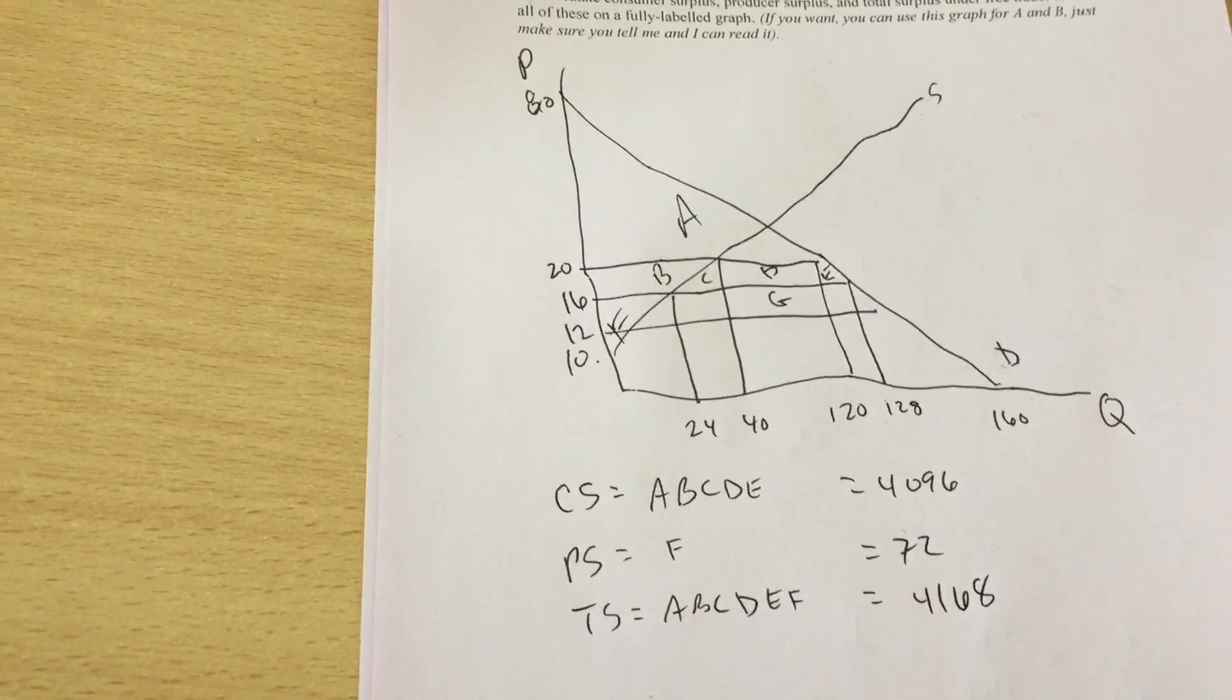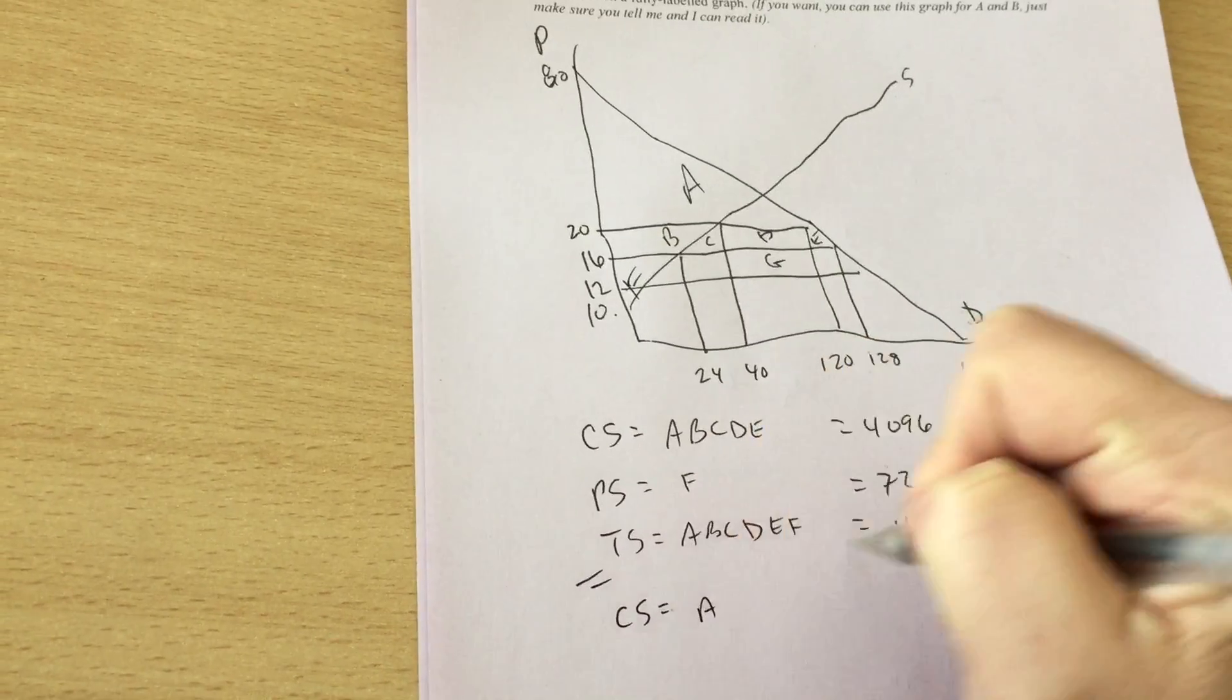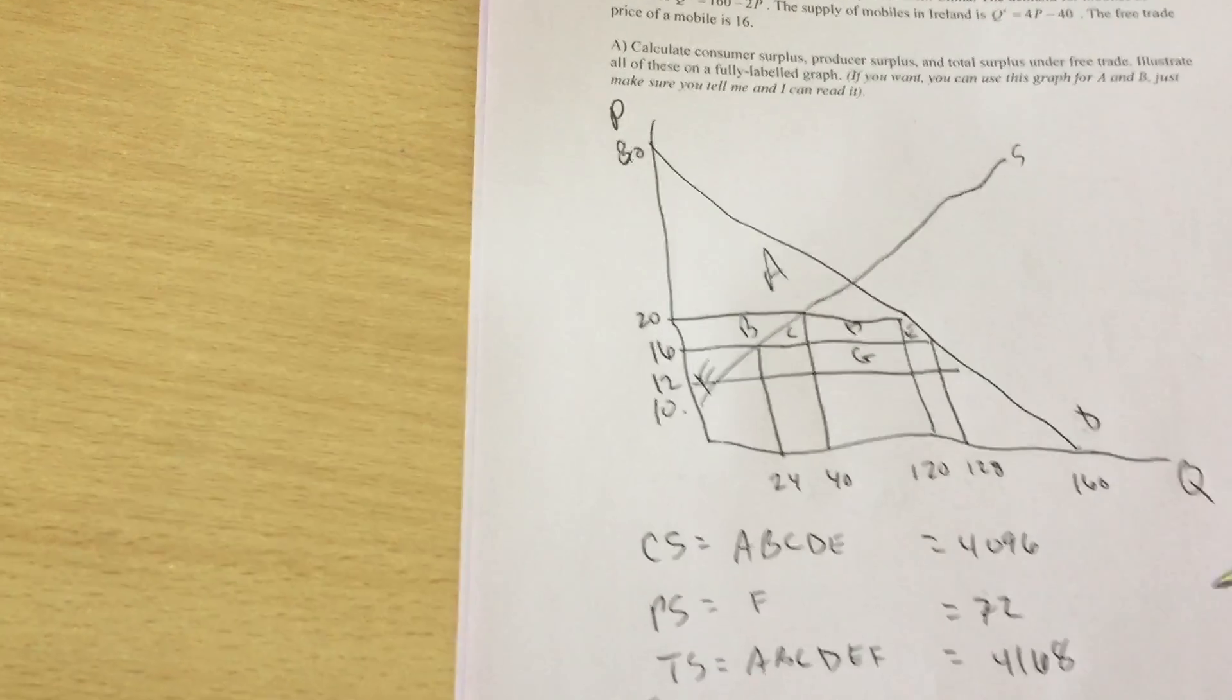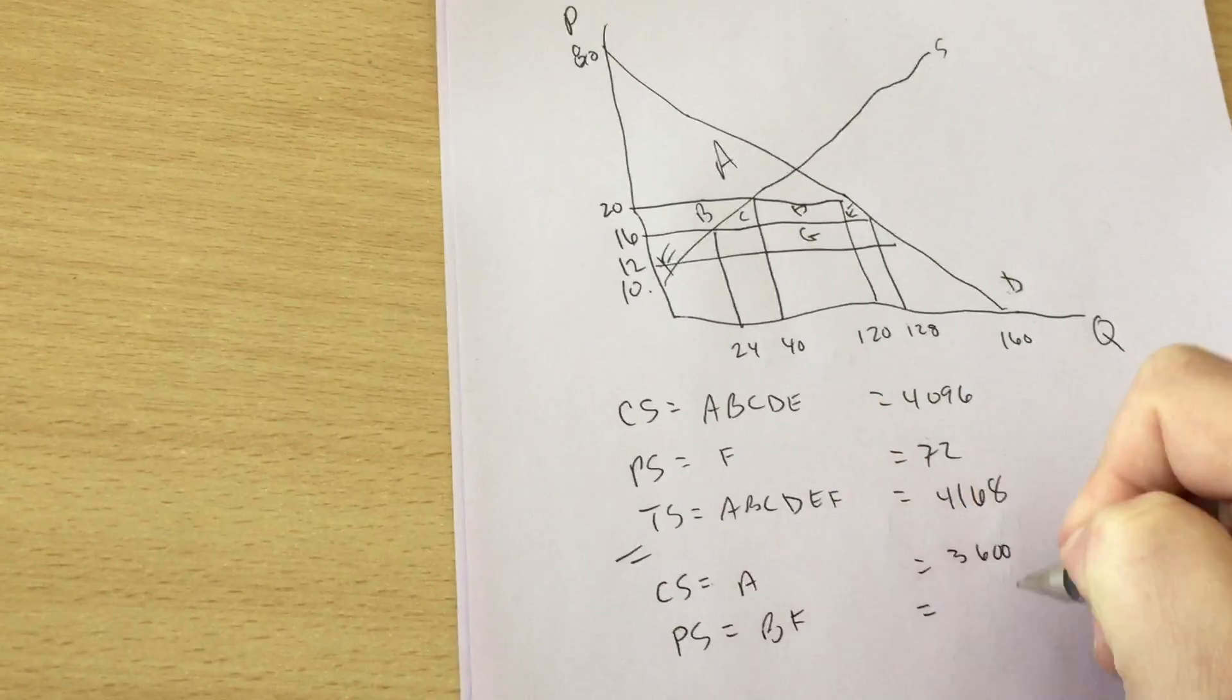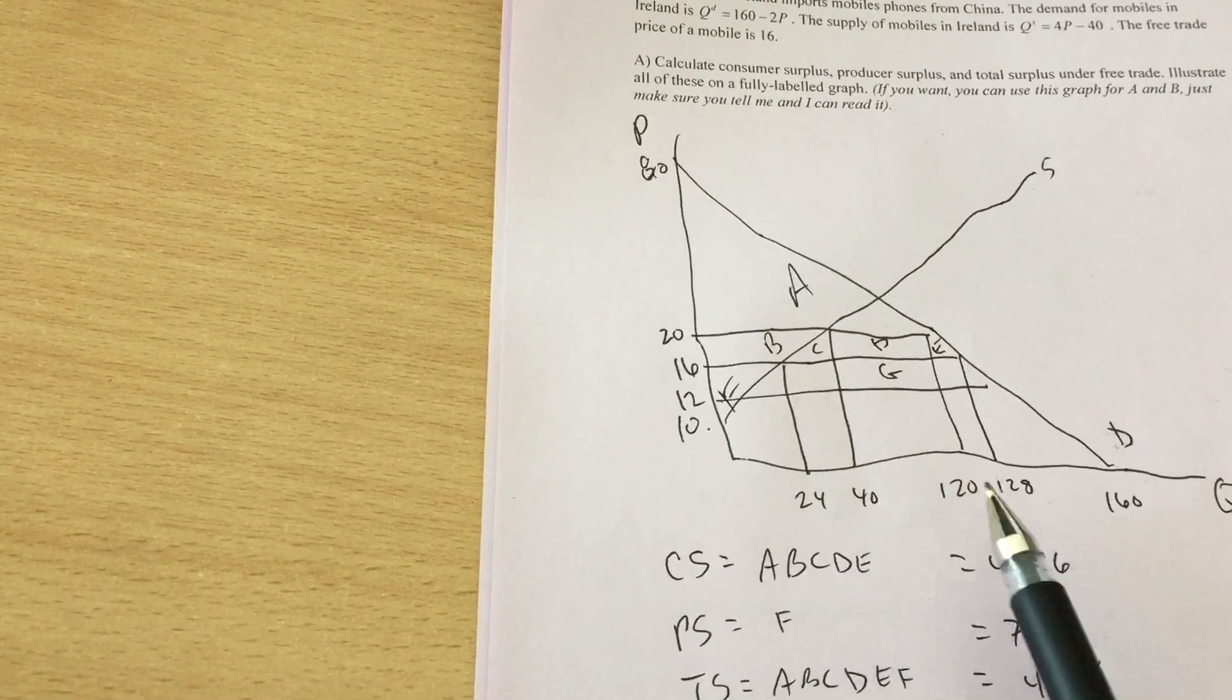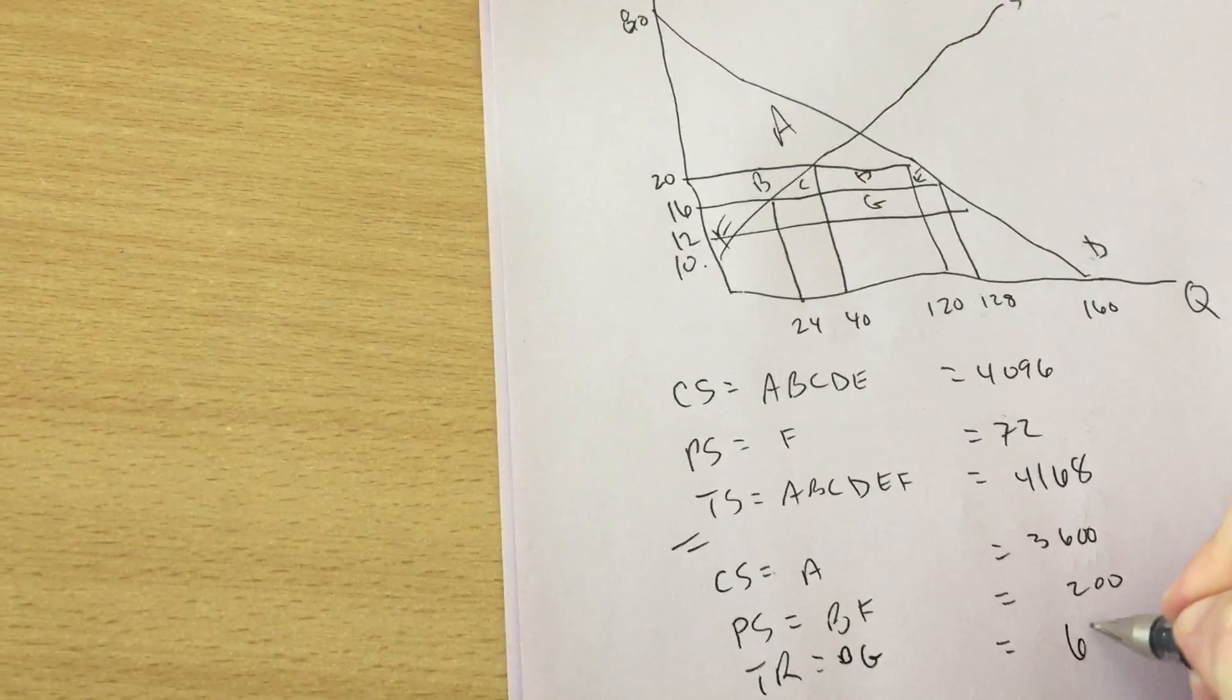So then we add on the tariff, the price in our country goes up to 20 that drives consumer surplus down. Consumer surplus falls to area A which is 3600. Price in our country goes up to 20. That's going to increase producer surplus to areas B and F which is 200. The government collects that 8 euro tariff on the 80 units that gets imported. That comes in as tariff revenue areas D and G which is 640.